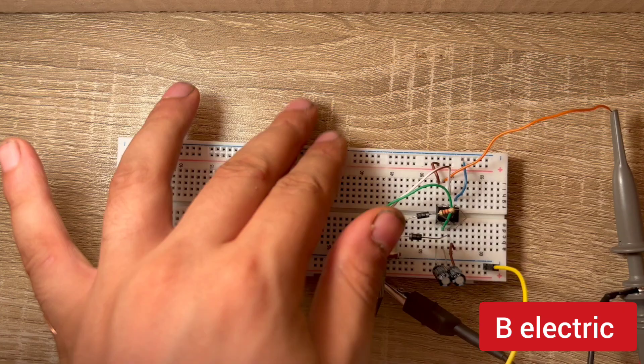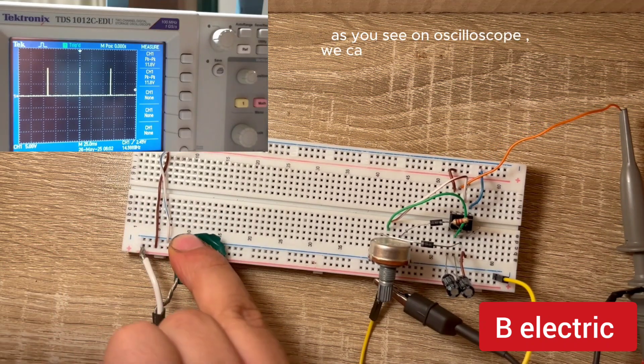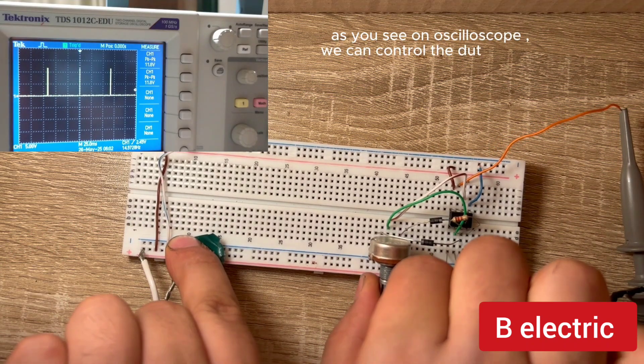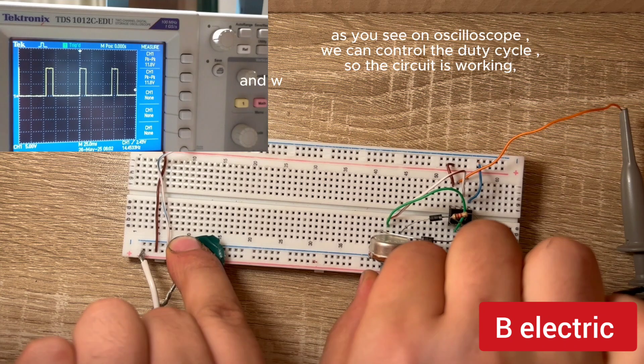Let's try. As you see on oscilloscope, we can control the duty cycle. So the circuit is working.